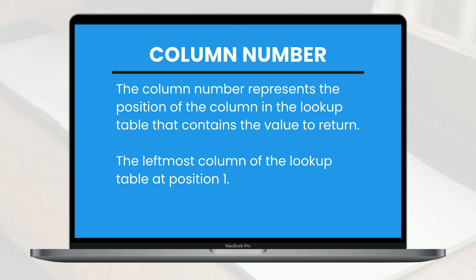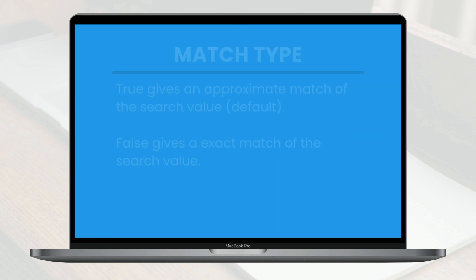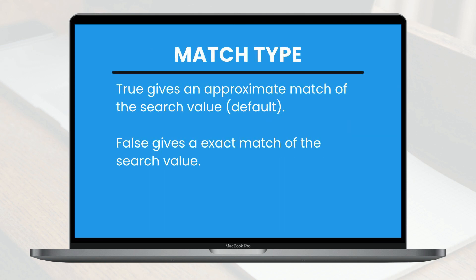The last argument is the match type. The default match type is true, which gives an approximate match of the search value, whereas false looks for an exact match. Since we want to get an exact match of our search value, we will select false.